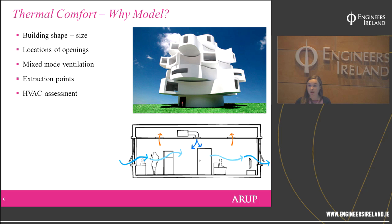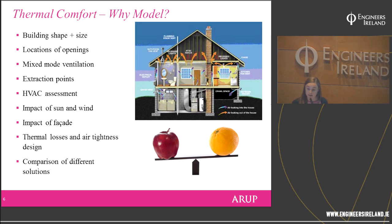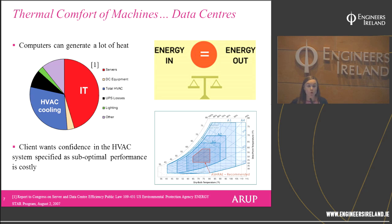We can look at mixed modes of ventilation — mixtures of natural and mechanical ventilation with multiple extraction points and openings. We can look at HVAC assessments, the impact of wind, facade elements such as brise soleil and how they affect internal thermal comfort, thermal losses, and air tightness design. Crucially, modelling allows us to very quickly and efficiently compare lots of different solutions.